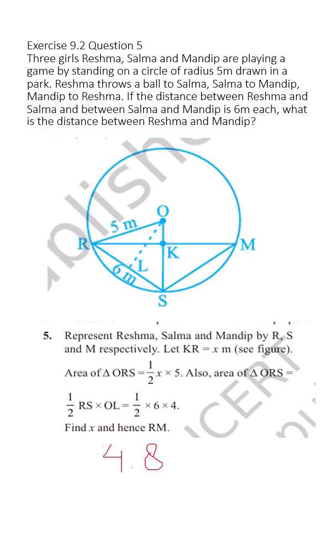It will be our RK, not RM. X is RK. Now RM is twice of RK because K is the midpoint. So 2 into 4.8 gives us the value of RM, that is 9.6 meters. That is the value of RM.